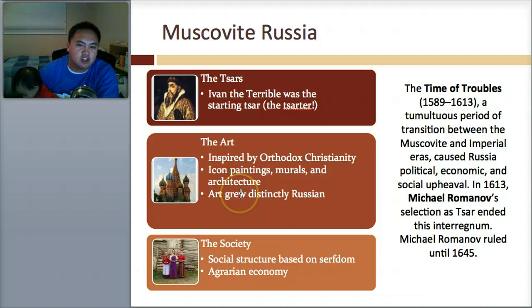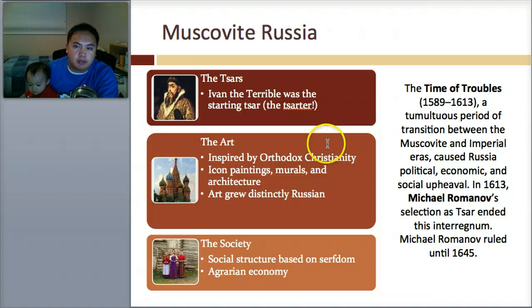The society was based on serfdom — we're talking about peasants and a very severe lower class, and also an agrarian, farming-based economy. Then between the Muscovite and the Imperial Eras, there's this era called the Time of Troubles, which caused Russia political, economic, and social upheaval.